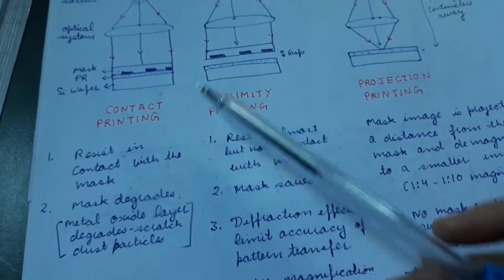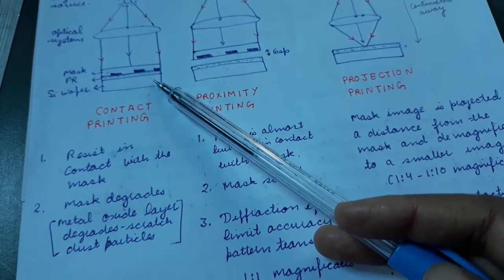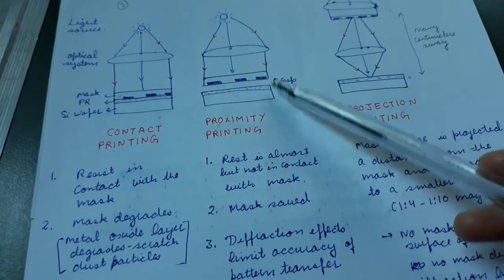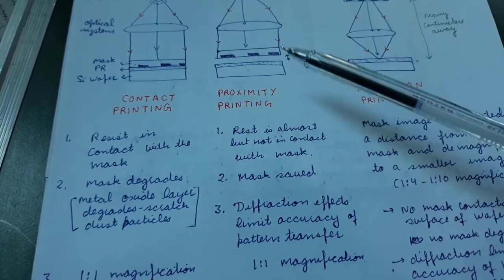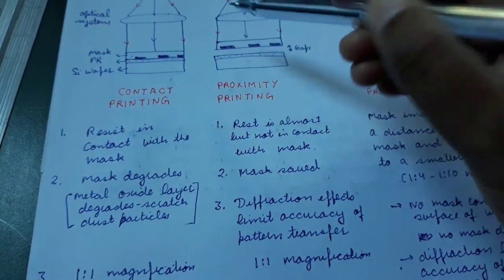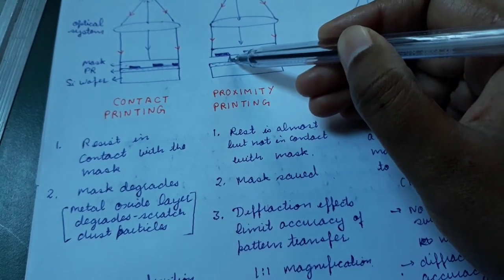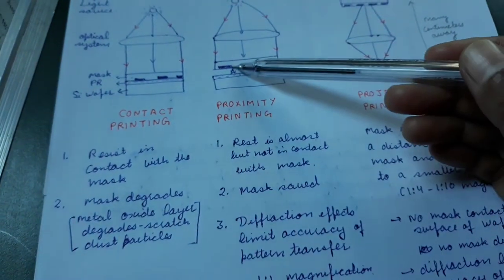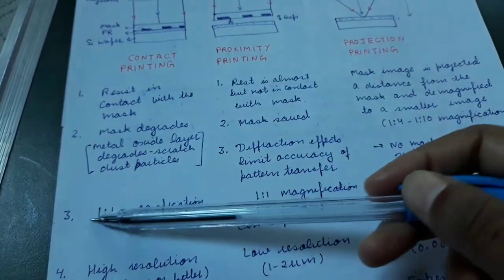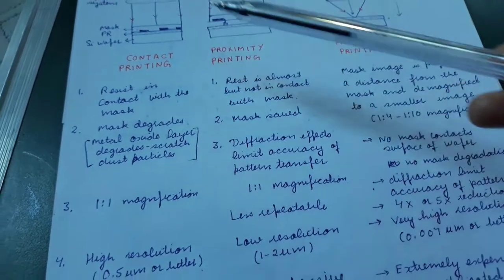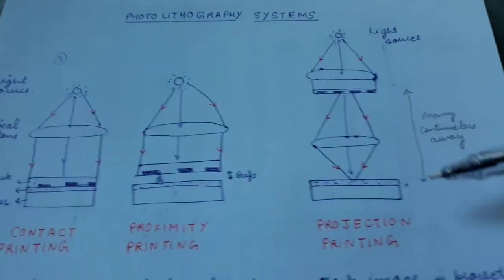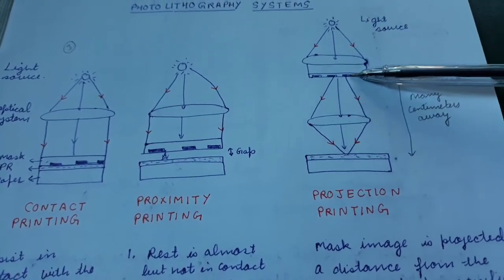In contact printing, degradation of the reticle may take place — there might be scratches or dust particles which deteriorate the pattern transfer. In proximity printing, because there is some distance the mask will not be deteriorated, but there are additional diffraction effects. Instead of passing straight, light can pass at an angle and get diffracted at the edges, decreasing resolution. There is a one-to-one ratio — whatever is the pattern is transferred to the photoresist — and both types are inexpensive.